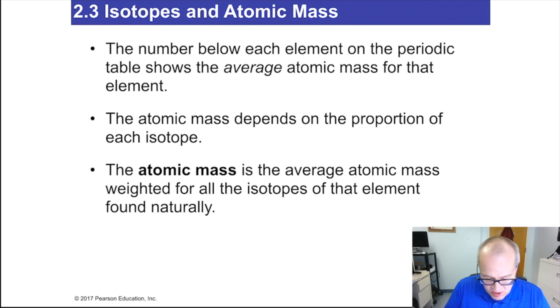Isotopes and atomic mass. The number below each element on the periodic table shows the average atomic mass for that element. The atomic mass depends on the proportion, what's called natural abundance, of each isotope. The atomic mass is the average atomic mass weighted for all the isotopes of the element found naturally.